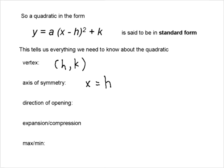Which way does this open? If a is greater than 0, meaning a is positive, the parabola opens up. If a is less than 0, it opens down. So if a is positive or negative, it tells us the direction of opening.